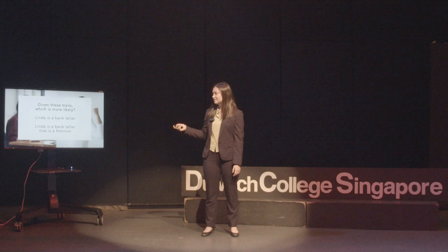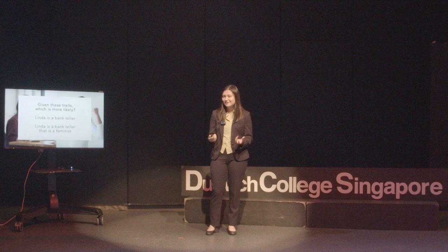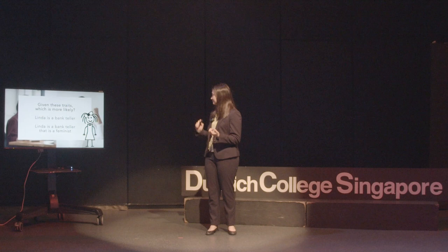Over 80% of people who took this test answered B: Linda is a bank teller who is a feminist. But why do we think this is more likely? Let's think logically — it doesn't really make sense. Bank tellers that are feminists are a subset of people that are bank tellers. Every bank teller that is a feminist is a bank teller anyway, so why would it be more likely for her to be a bank teller who is a feminist?